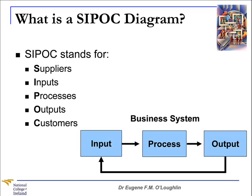Throughout the process, the Suppliers (S) provide the Inputs (I) to the Process (P). The process you're looking to improve adds business value, and this results in Outputs (O) that should meet or exceed a Customer's (C) expectations. Our SIPOC diagram takes the perspective that any procedure, any business system, no matter how complicated, can be broken down into three components: Input, Process, and Output. And this forms the central part of our SIPOC diagram.